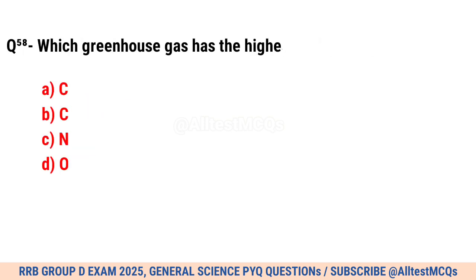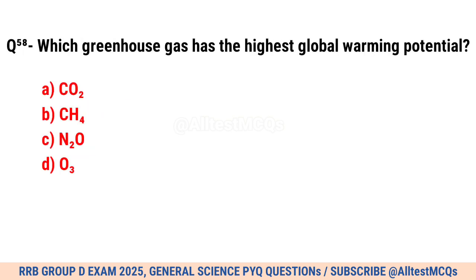Question No. 58. Which greenhouse gas has the highest global warming potential? Correct option is C. N2O.